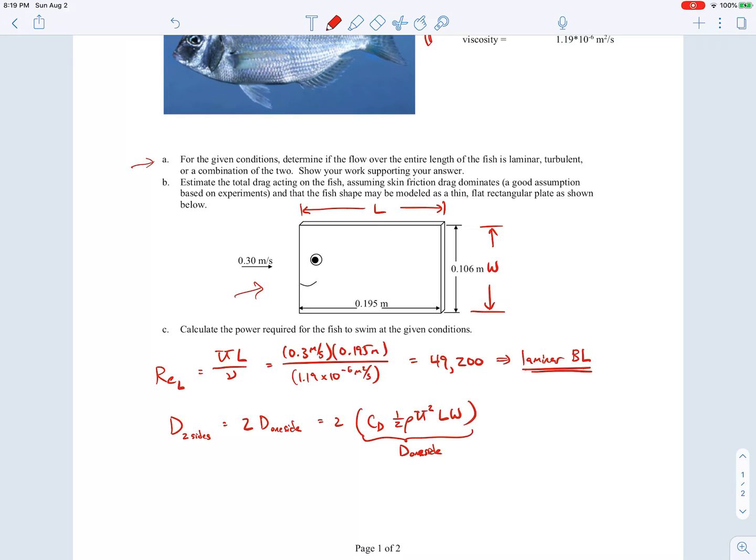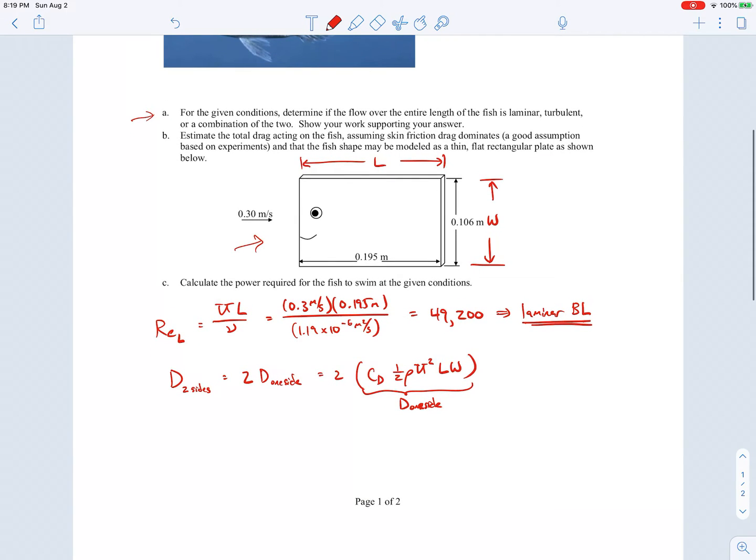The drag coefficient, since the flow is laminar, will be the Blasius solution drag coefficient. We can go back to our notes from lecture and find that the drag coefficient for a laminar boundary layer is 1.328 divided by the Reynolds number based on the length of the fish, and then we square root that Reynolds number.